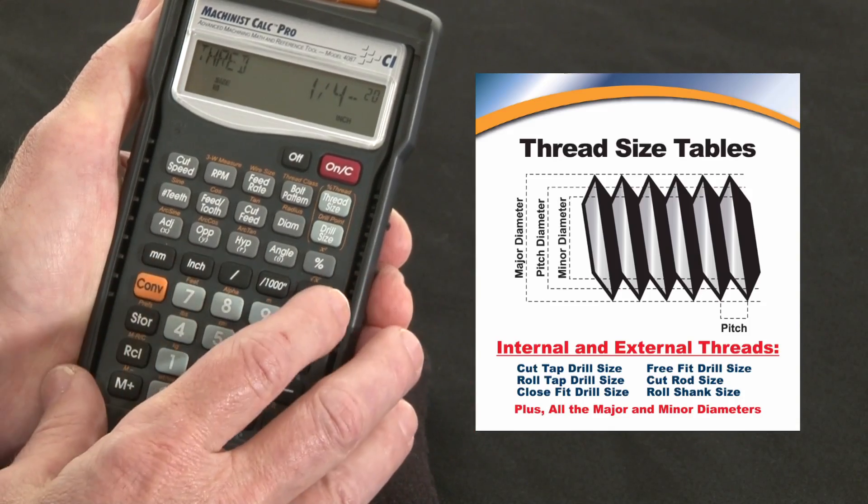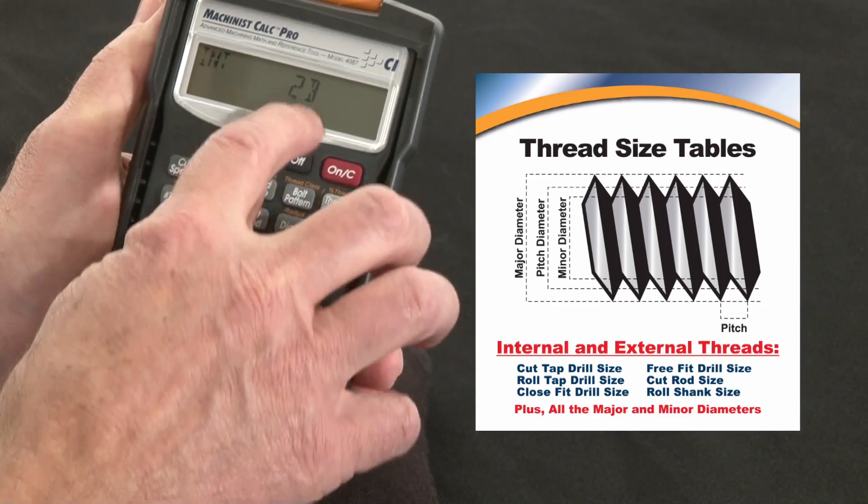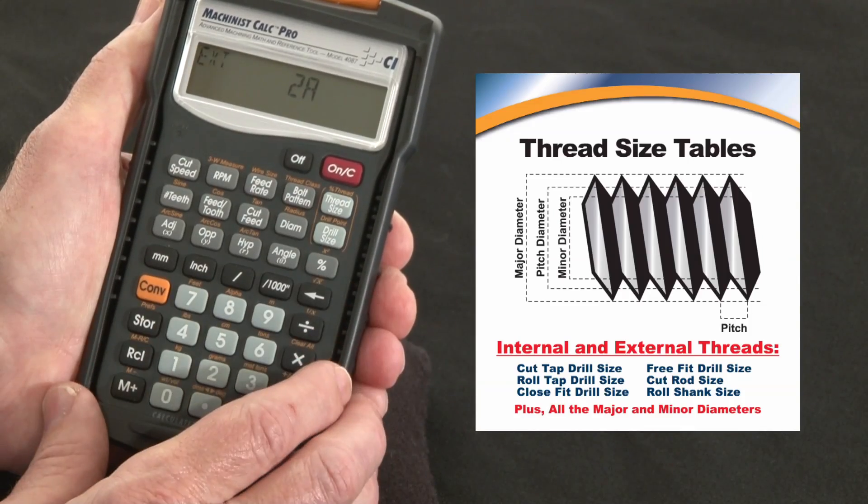You can do this for internal, as we've just done, or external threads. Let me convert this to thread class, now we're in 2B, let's change that to external, class 2A.